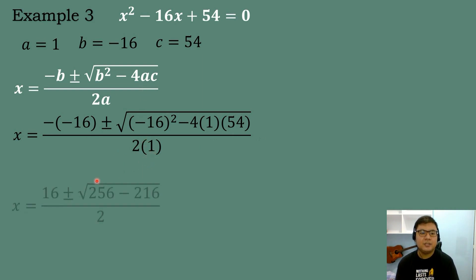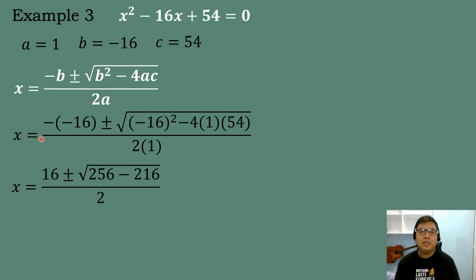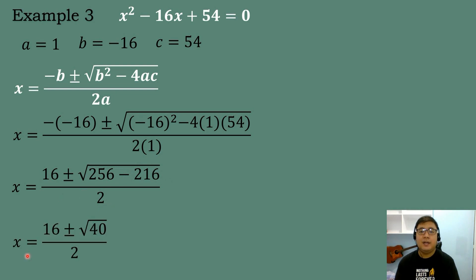Simplifying: negative times negative 16 equals positive 16. Negative 16 to the second power: negative 16 times negative 16 equals positive 256. Negative 4 times 1 is negative 4. Negative 4 times 54 is negative 216. All over 2 times 1 equals 2. So X equals 16 plus or minus the square root of 256 minus 216, which equals the square root of 40, all over 2.